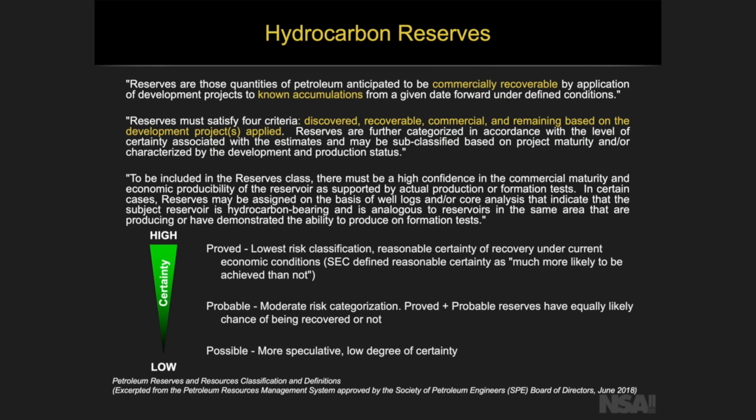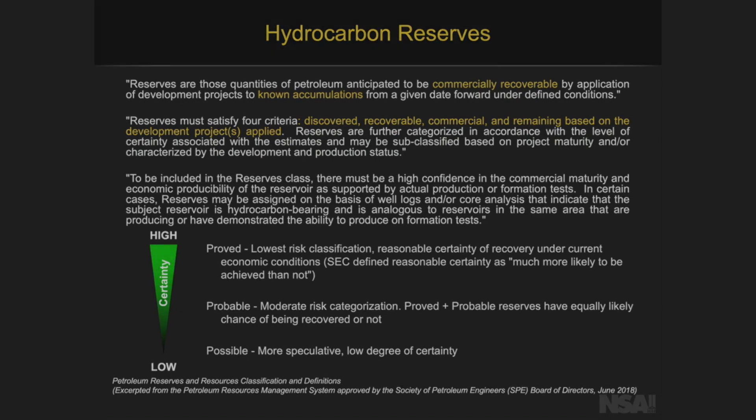Any cumulative production would not be considered in hydrocarbon reserves. As you can see, the reserves get broken out into proved, probable, and possible on the certainty scale. The highest certainty is proved reserves — the lowest risk, with reasonable certainty of occurring, sometimes called a P90 number, meaning 90% of estimated outcomes will be higher than this. The probable number is more moderate risk, and proved plus probable becomes the P50 type number, with equal chance of exceeding or being less than that number. The possible is more speculative with a higher degree of uncertainty.